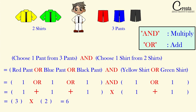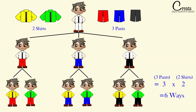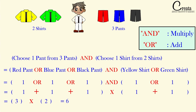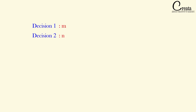This is a very basic fundamental that will be used all over probability, permutation and combination. You should know it. In general terms, if we are having decision 1 as m and decision 2 as n — or event 1 as m and event 2 as n — we get the number of ways as m × n.